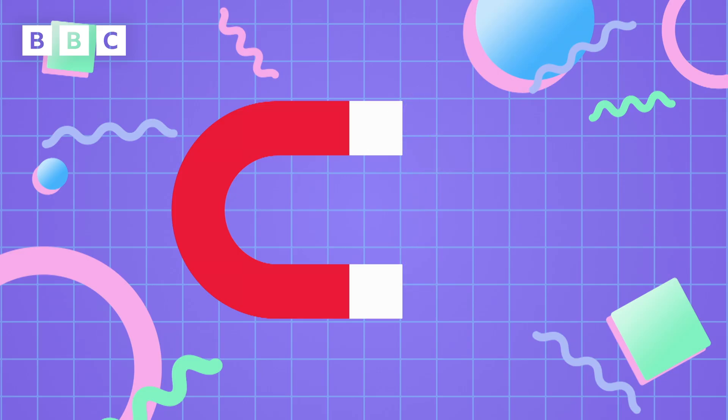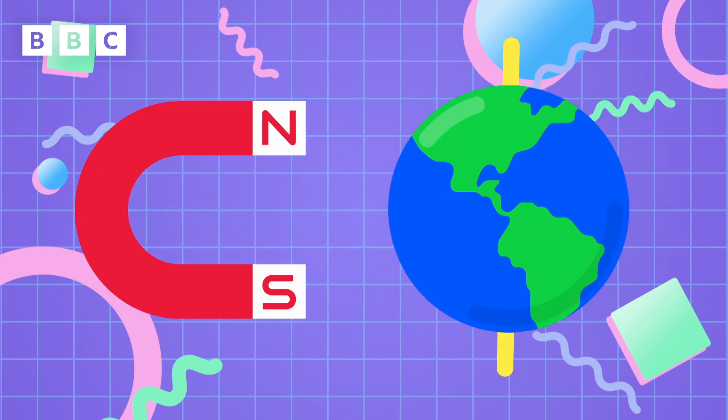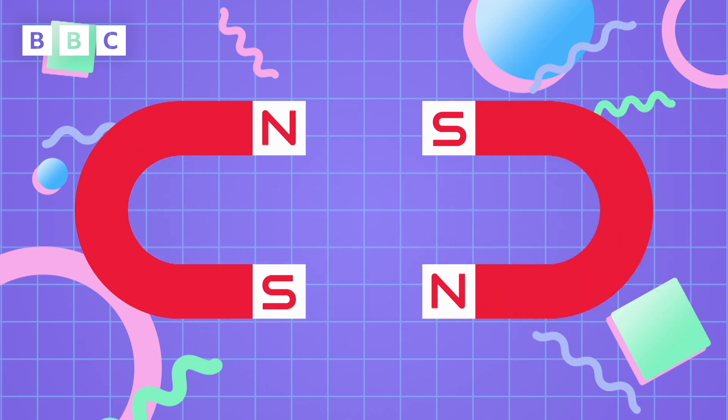The two ends of a magnet are called poles, and each magnet has a north pole and a south pole, just like planet Earth. Opposite ends of magnets attract, so the north pole of one magnet attracts the south pole of another magnet.